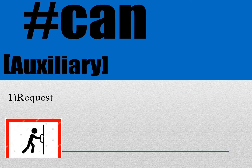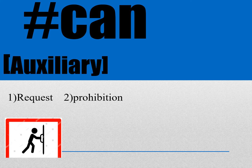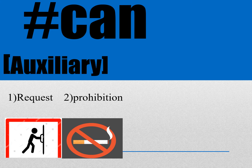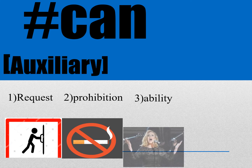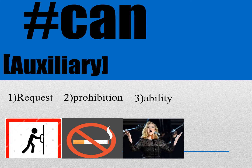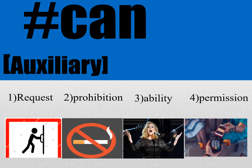Number one: request. برای مثال شما می‌خواید یه نفر بگین که میتونی در رو ببندی — این در واقع یه جور request، یه جور خواهشه، درخواسته. Number two: prohibition — ممنوعیت، مثلاً یه کاری ممنوعه. مثال: نمیتونی اینجا سیگار بکشی. Number three: ability — مثلاً خیلی می‌تونه قشنگ آواز بخونه. Number four: permission — در واقع اجازه دادن یا اجازه گرفتن برای انجام کاری. مثلاً می‌خواید بگید: میتونم گوشیتون رو داشته باشم؟ — یه جور اجازه می‌گیرید.